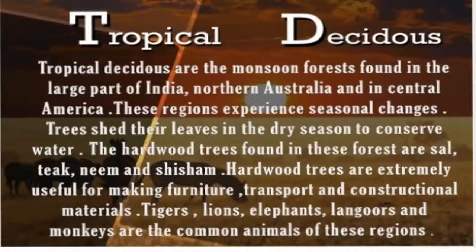Another type of forest is known as tropical deciduous forest. This is very important: the maximum part of our country India is covered with tropical deciduous forest. The speciality of this forest is that it sheds its leaves in specific months of the year, and due to the shedding of leaves it is called a deciduous forest. The common examples are sal, teak, neem, and shisham. The hardwood trees are extremely useful for making furniture, transport, and constructional materials. Tigers, lions, elephants, langurs, and monkeys are the common animals of this region.